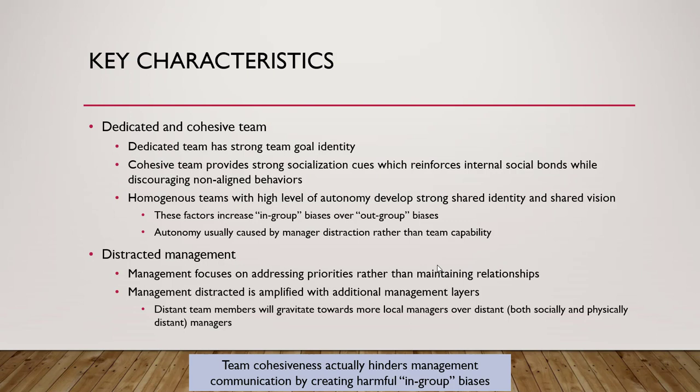If the manager does not maintain the relationship, the in-group versus out-group biases and team autonomy become stronger and stronger. Management distraction is amplified with additional management layers — the further up the management tree, the harder it is to reinforce social and psychological cues with the distant team, because everyone has different priorities. It's hard for a manager three levels up with a hundred different teams to focus on each one. That's why it's important for the direct team manager to maintain the relationship.